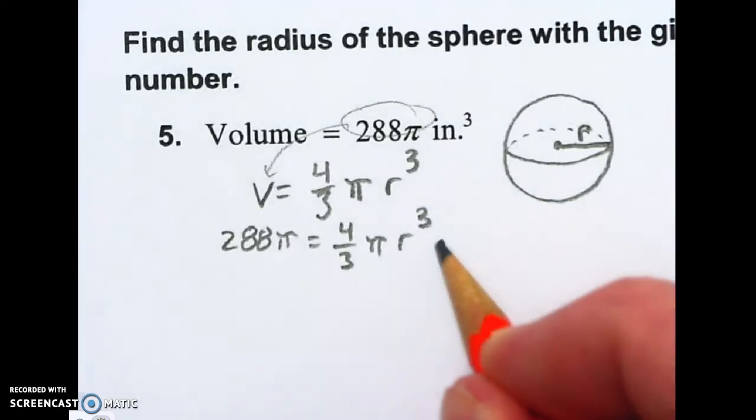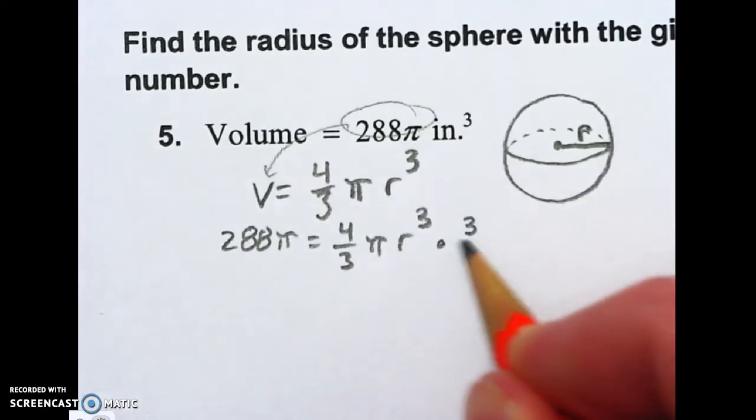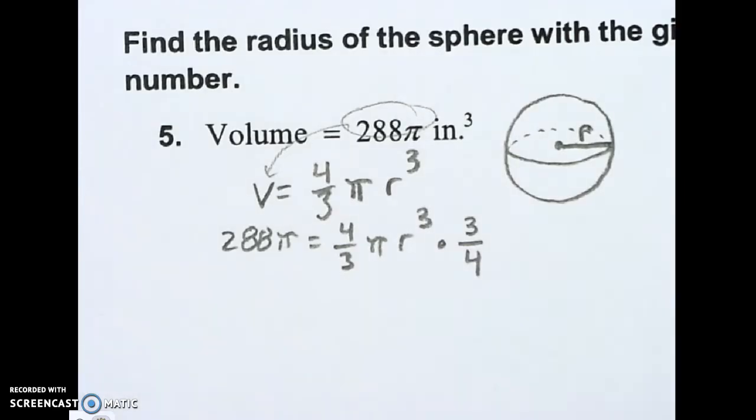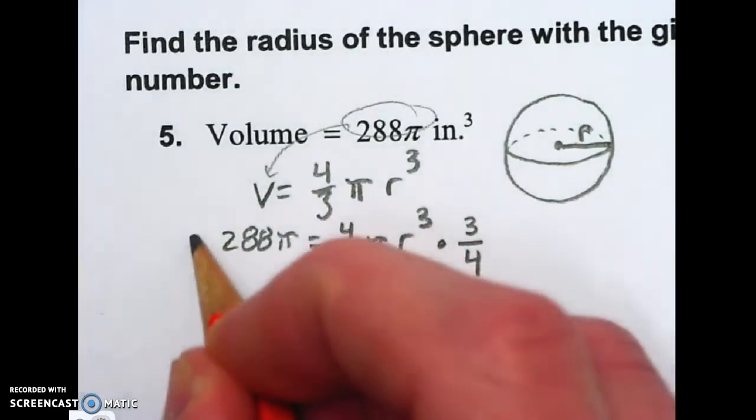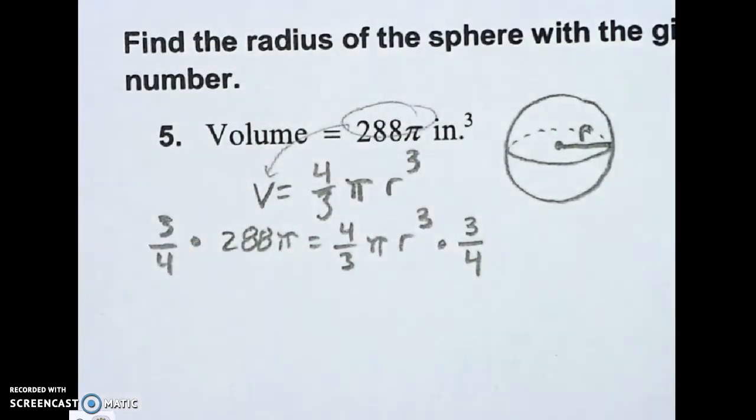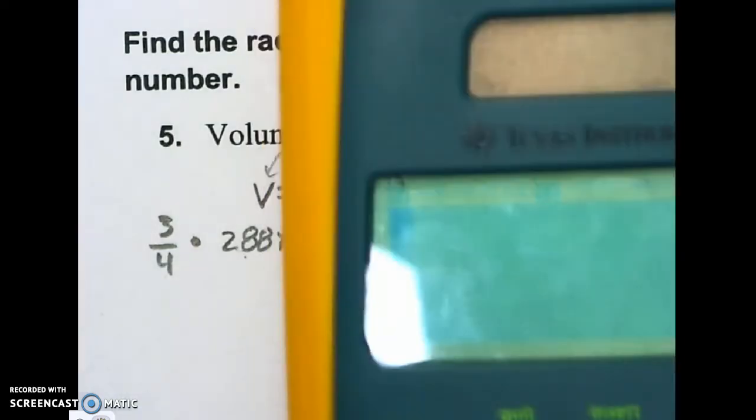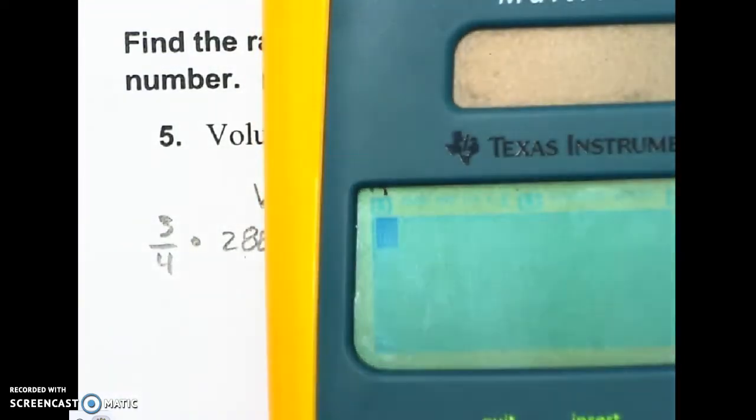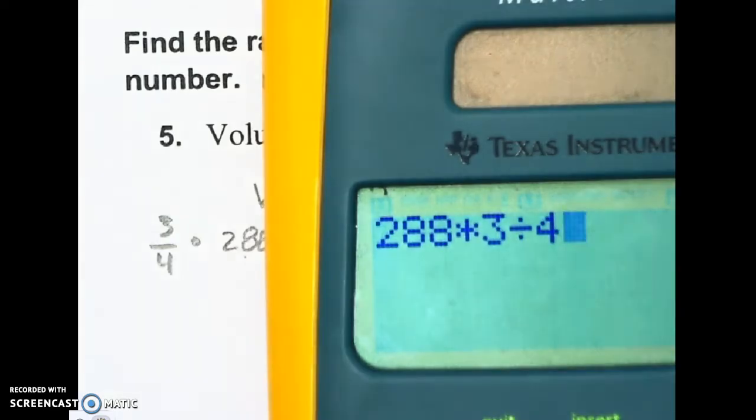So I'm going to multiply both sides by the flip of that fraction. I'm going to multiply by 3 over 4. And on this side, I'm going to multiply by 3 over 4. So I'm going to multiply 288 times 3 fourths. Here's how you do that. You do 288 times 3 divided by 4.